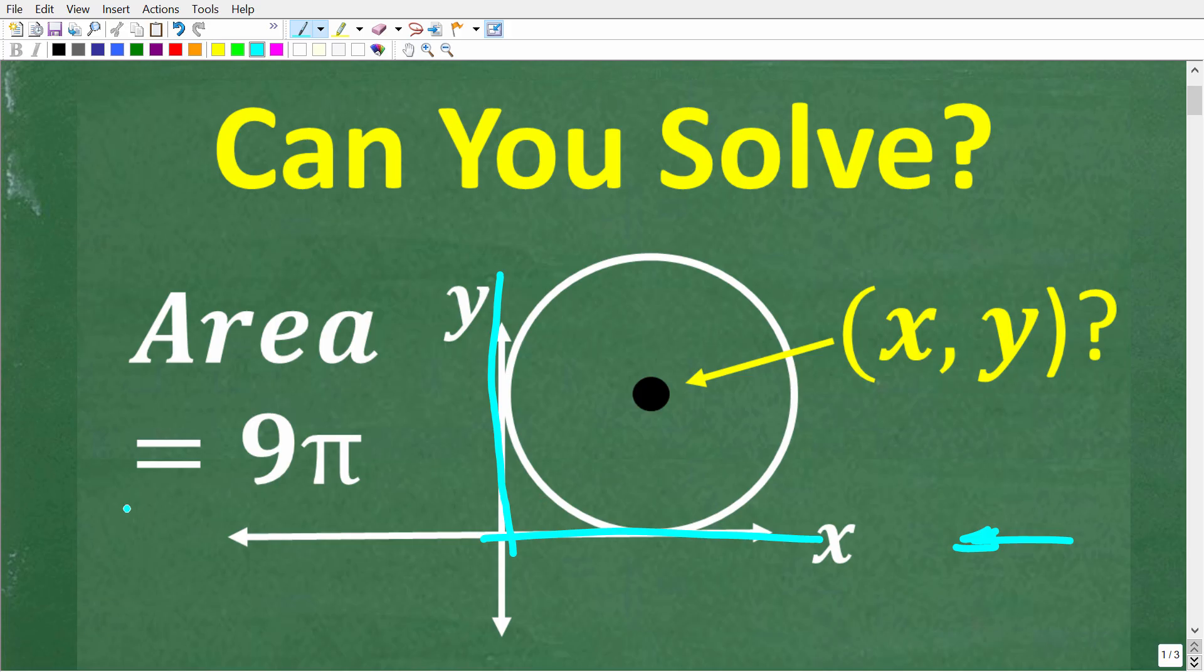We're told that the area of this circle is 9π. The question is we're looking for the x-y coordinate of the center of this circle. If you can figure this out, go ahead and put your answer in the comment section.